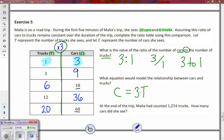To wrap this up, it says at the end of the trip Malia had counted one thousand two hundred fifty four trucks. So there's some key information: one thousand two hundred fifty four trucks.